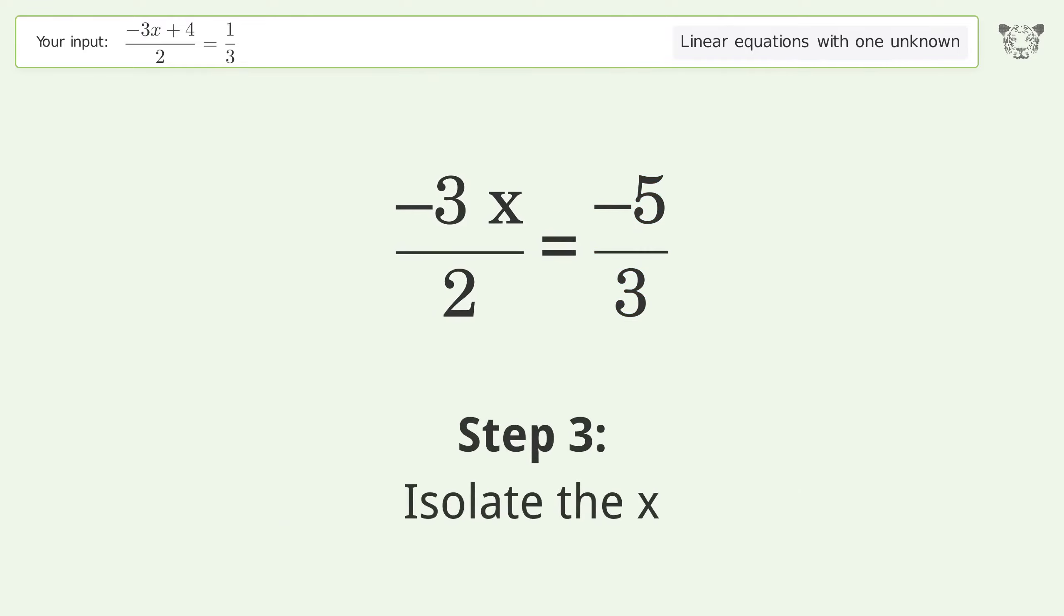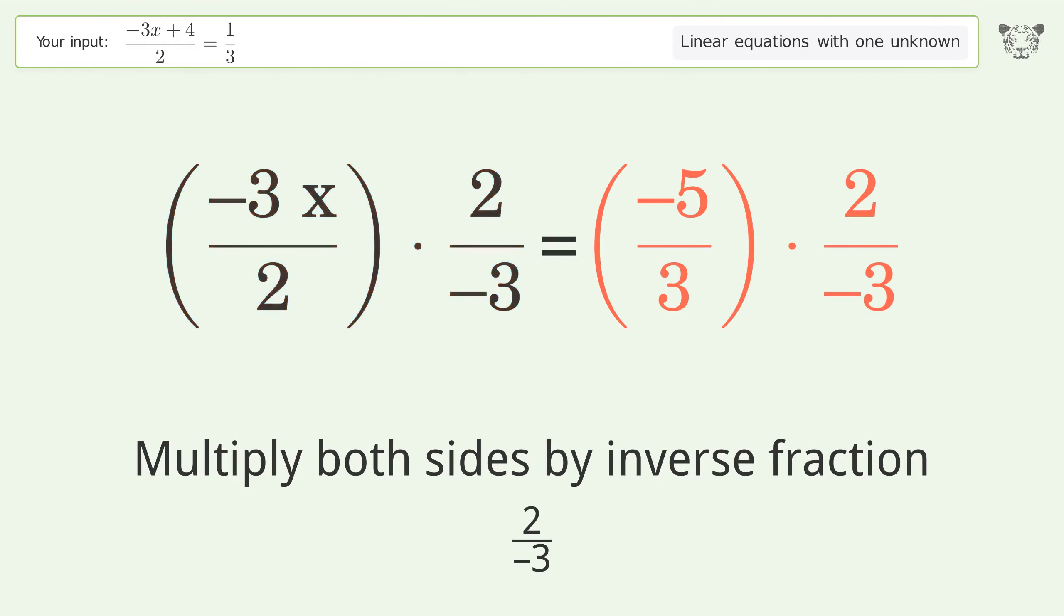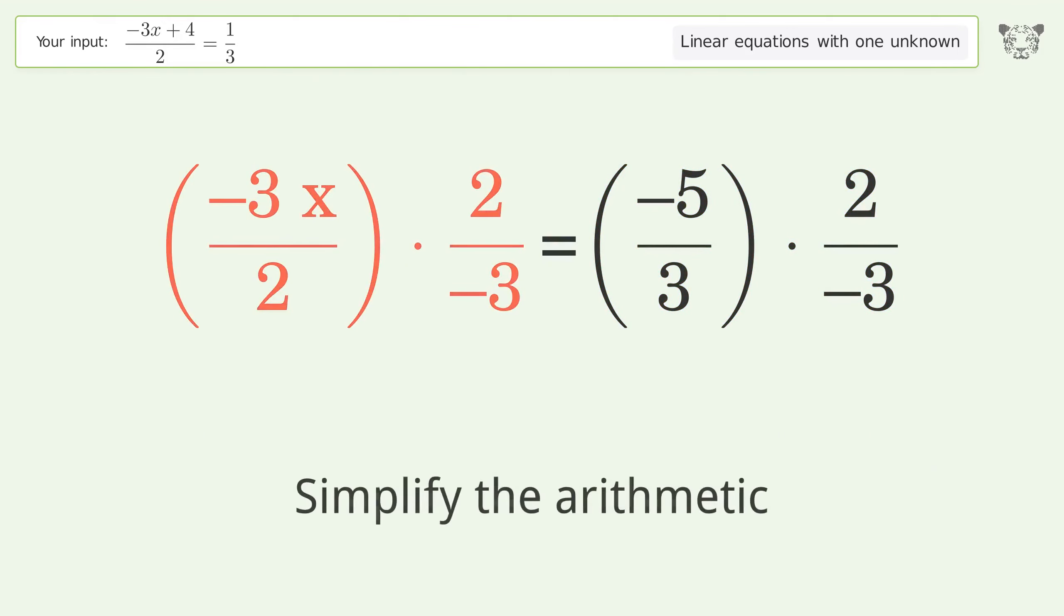Isolate the x. Multiply both sides by inverse fraction 2 over negative 3. Simplify the arithmetic.